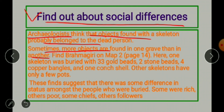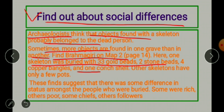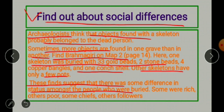Find Brahmagiri on Map 2, page 14. Here, one skeleton was buried with 33 gold beads, two stone beads, four copper bangles, and one conch shell. Other skeletons had only a few objects. These finds suggest that there was some difference in status among the people who were buried.